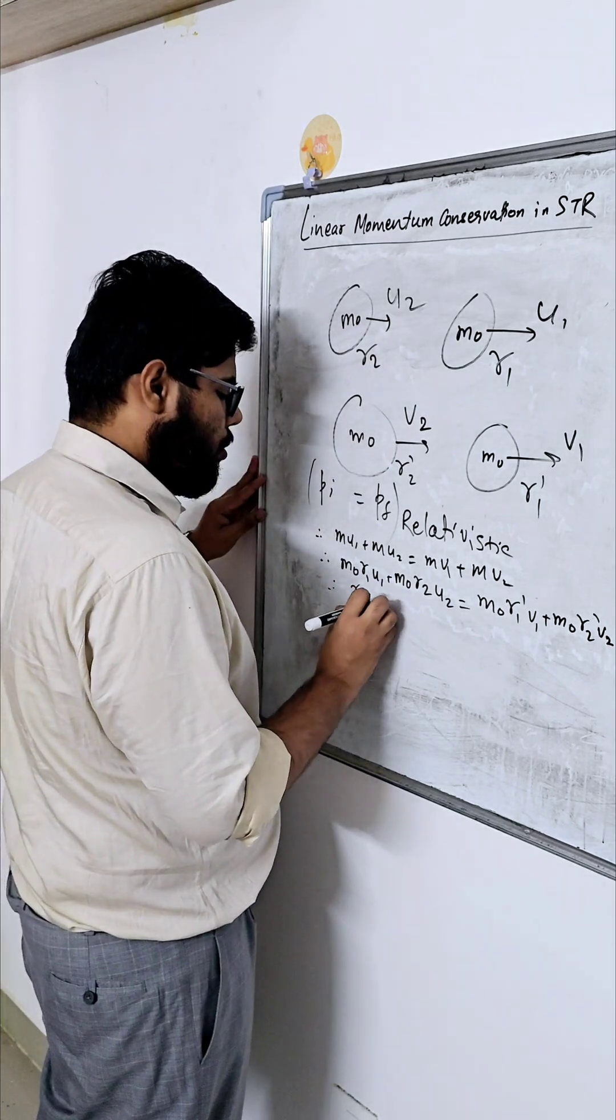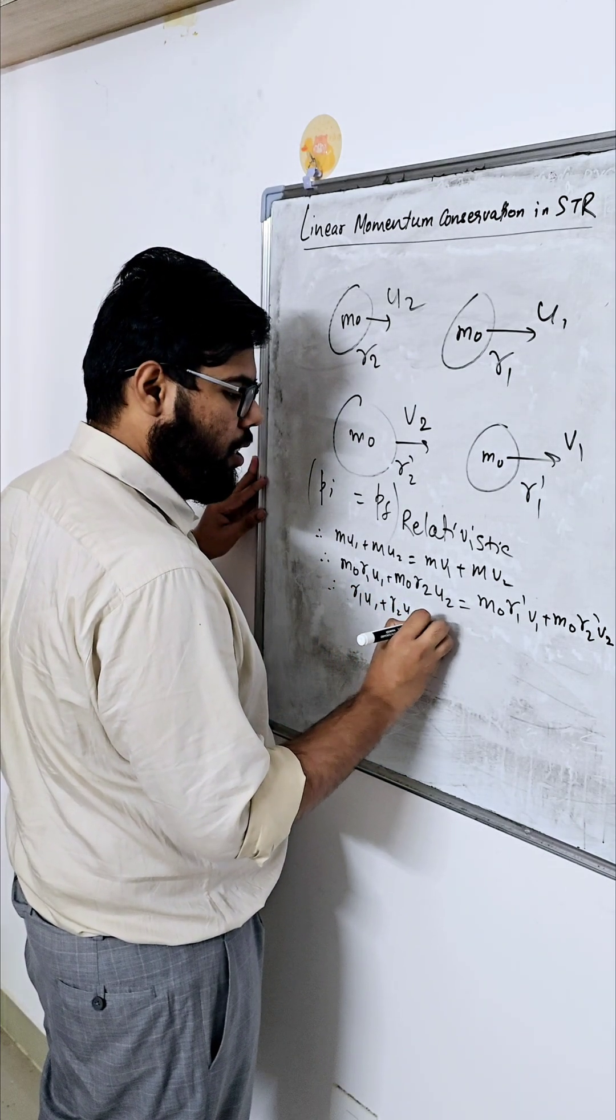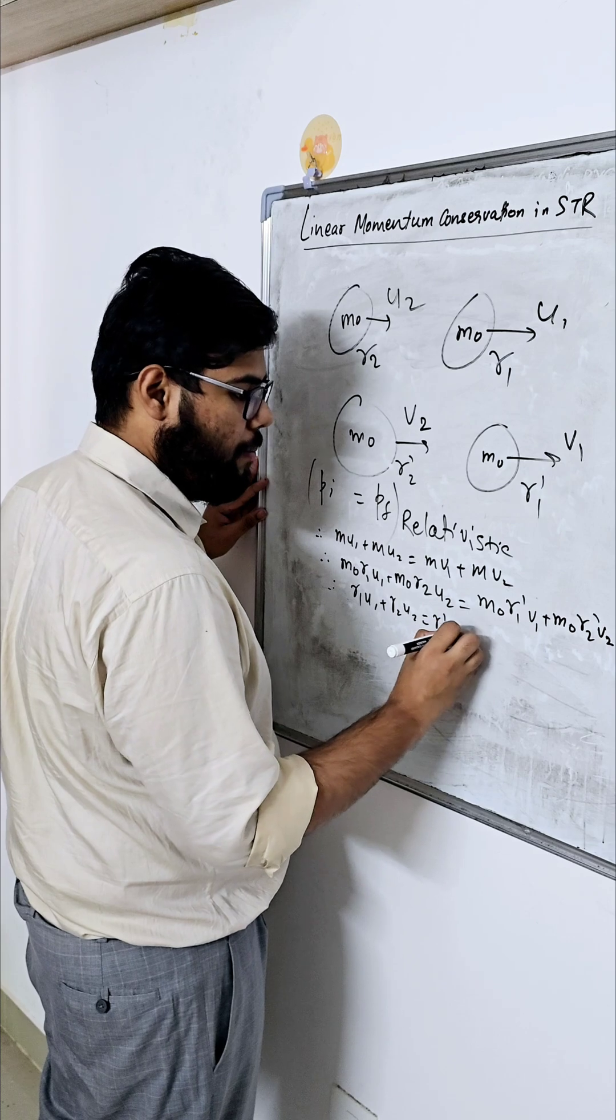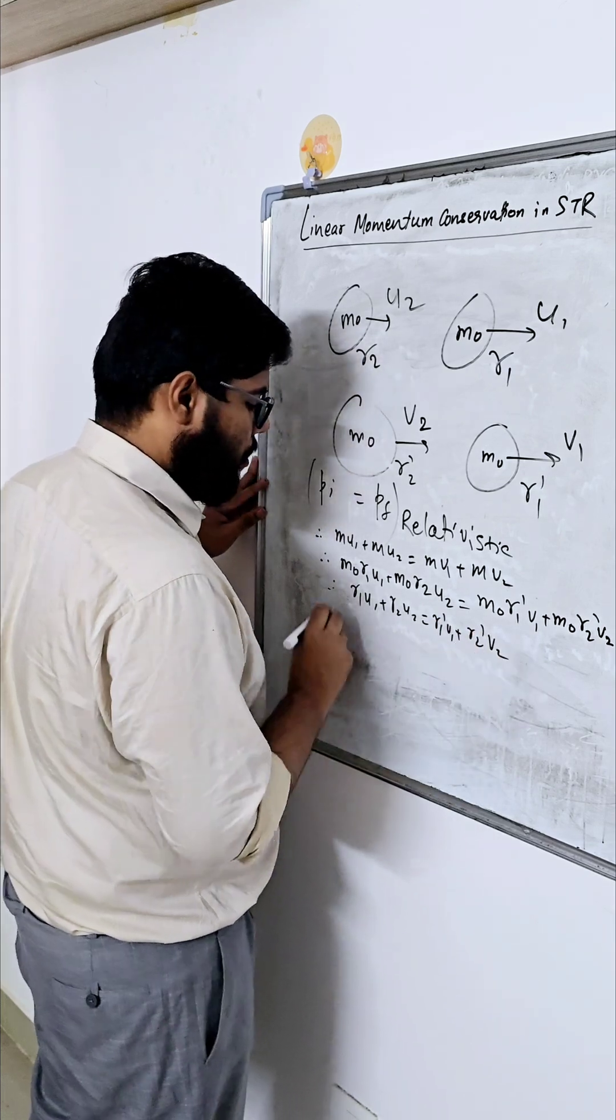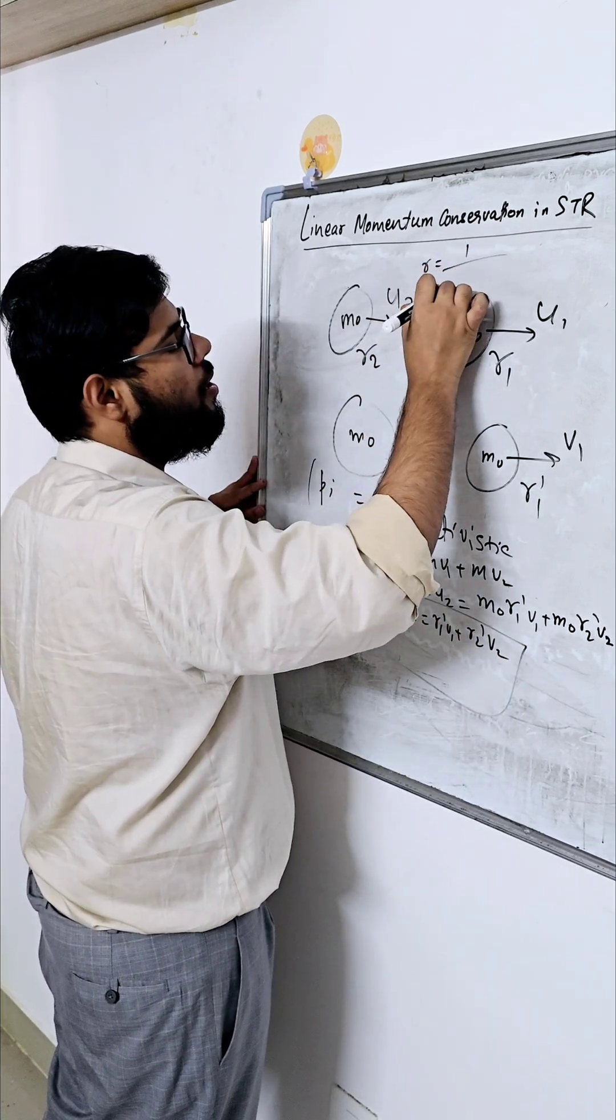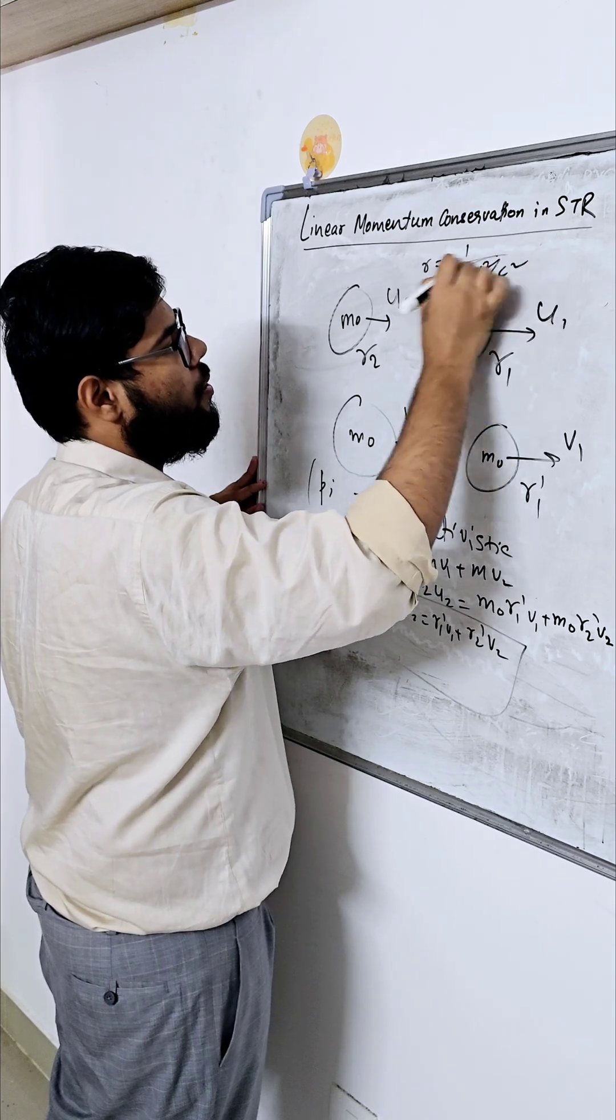So from this we can say gamma1 U1 plus gamma2 U2 is equal to gamma1 dash V1 plus gamma2 dash V2, where of course you know gamma is equal to 1 over root 1 minus V square by C square, right?